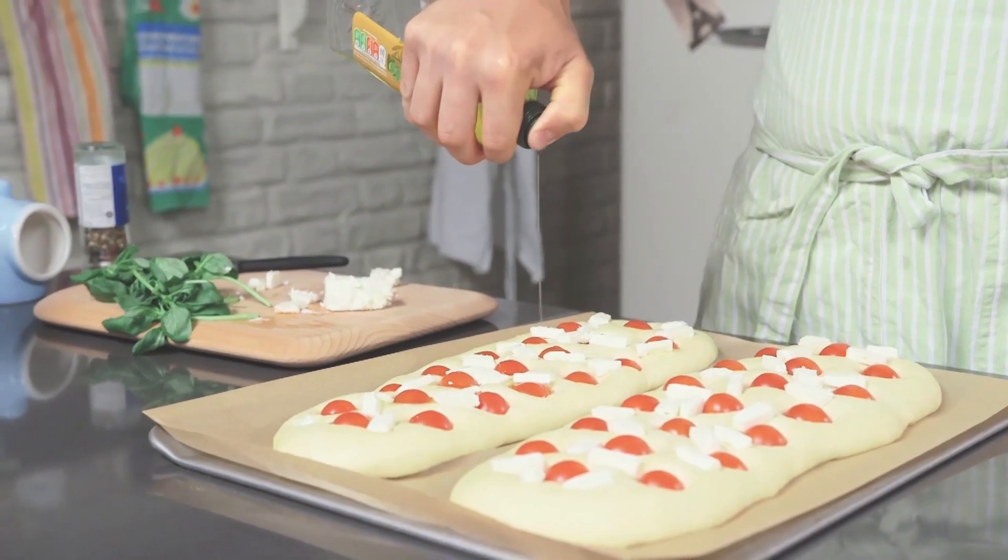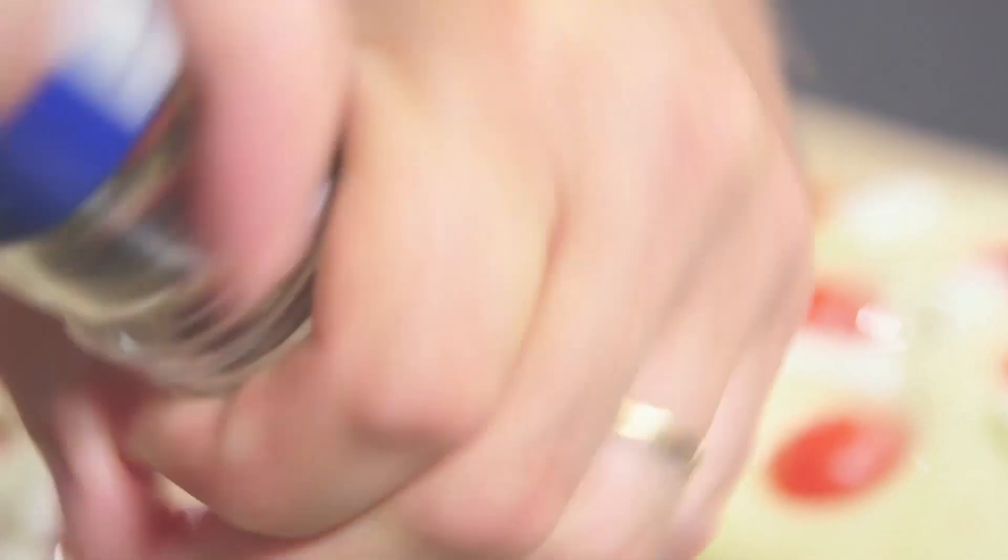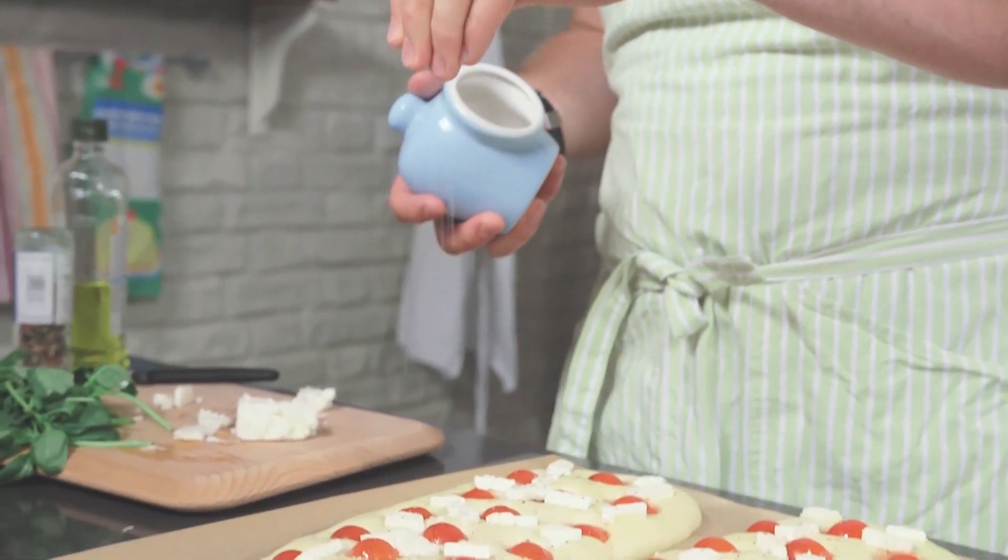Drizzle with more olive oil, then salt and pepper to taste. I like to add quite a lot of salt, but you don't have to. And this goes in the oven for 25 minutes.